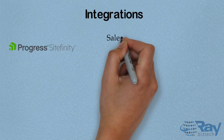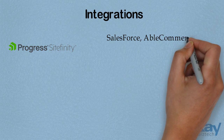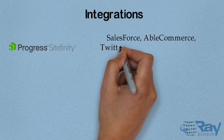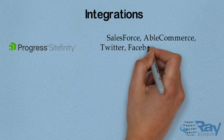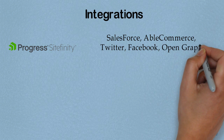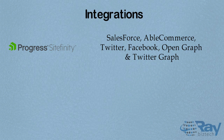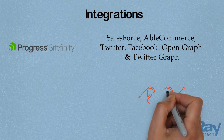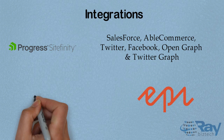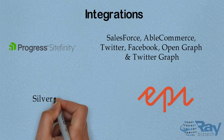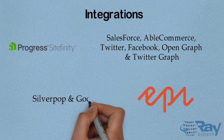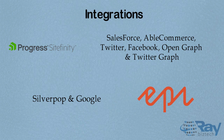Integrations for Progress Site Affinity include Salesforce, Able Commerce, Twitter, Facebook, Open Graph, and Twitter Graph. For API Server, integrations include Silverpop and Google.